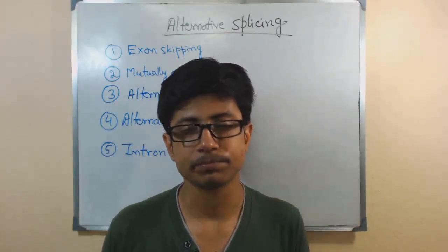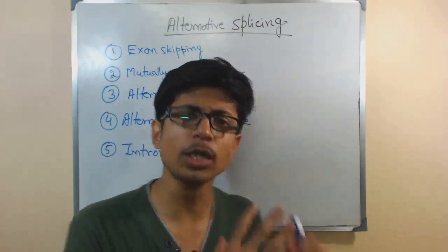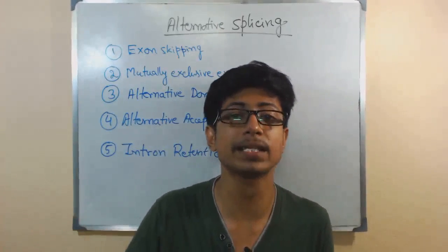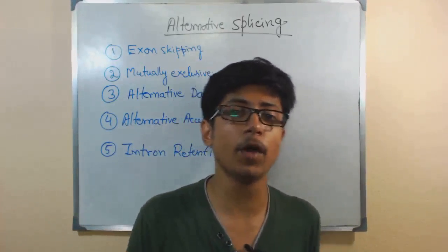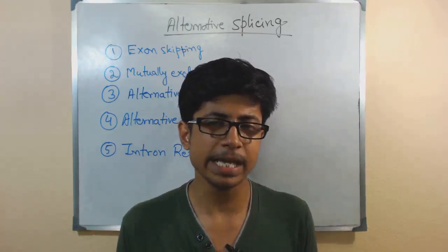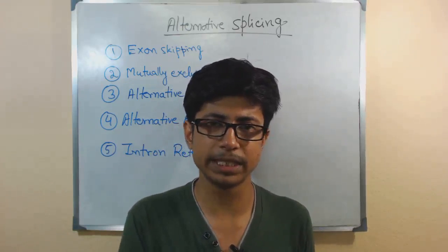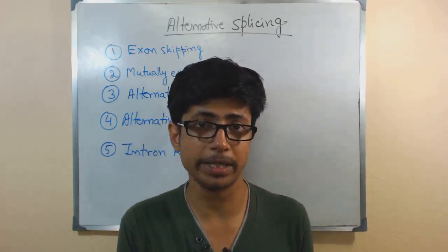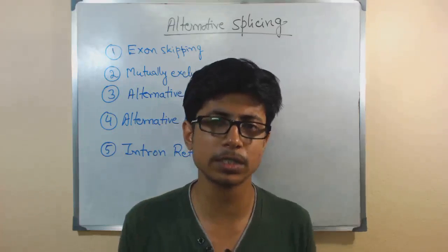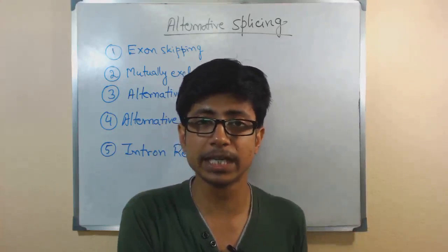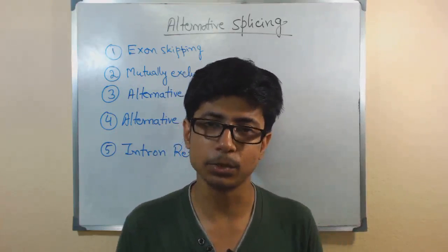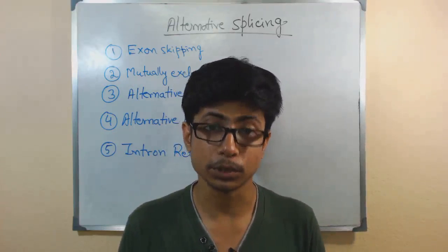Now, what does alternative splicing actually mean? This alternative splicing is a kind of splicing process that involves the spliceosome machinery — that means it involves proteins like U1, U2, U4, U5, U6, all those proteins that we've seen used in the case of spliceosome-mediated splicing. So if you don't have any idea about splicing, do not watch this video first — go to my channel and watch a splicing video first, then come back.